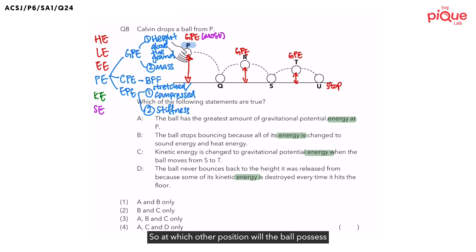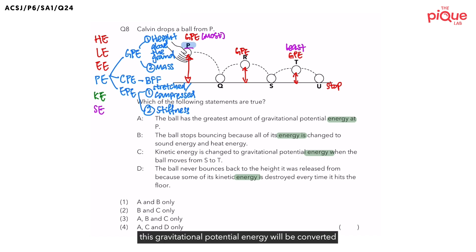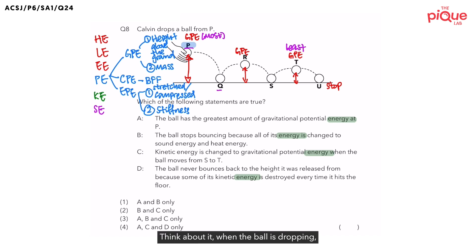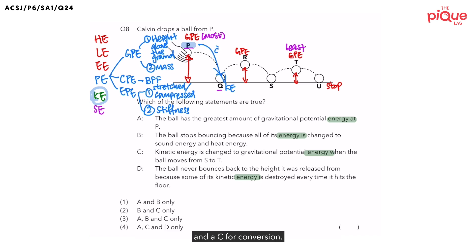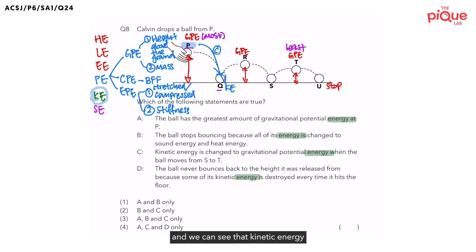At position T, the ball possesses the least gravitational potential energy because it is at the lowest height above the ground. Going back to position P — when Kelvin drops the ball, gravitational potential energy is converted to another form. As the ball moves down to Q, it possesses kinetic energy. This shows gravitational potential energy converting to kinetic energy. When the ball bounces back up from Q to R, kinetic energy converts back to gravitational potential energy. However, the ball at R has less gravitational potential energy than at P because it is at a lower height.